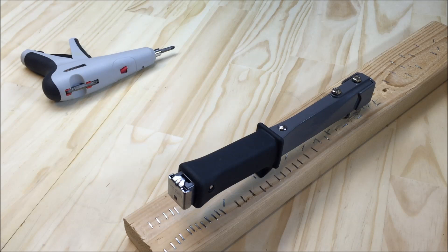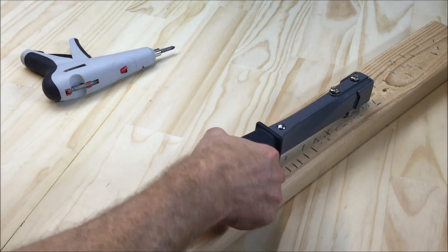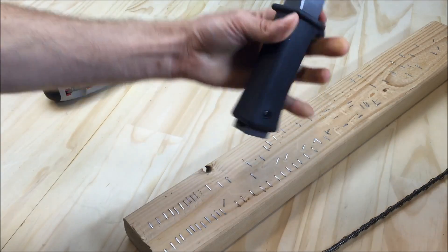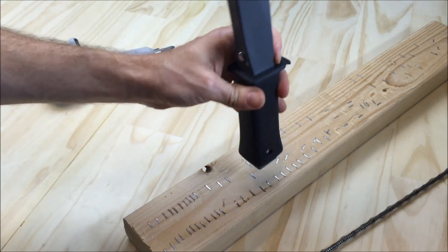Here is how to remove a jam on the Arrow Fastener HT55 Hammer Tacker. First, remove the pusher assembly and remove any staples that might be loose on the magazine.